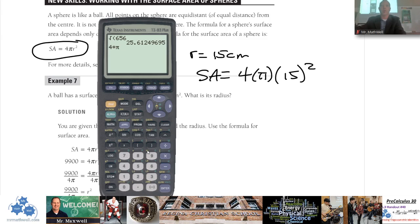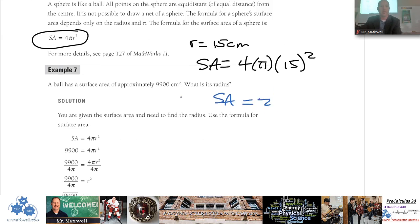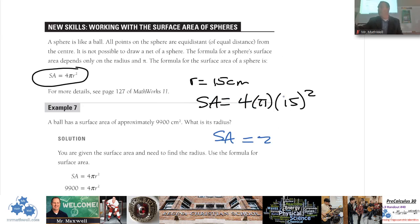4 times 225... you've got 2827. The measurement from school - 2827, 2827. That would be centimeters squared for surface area.